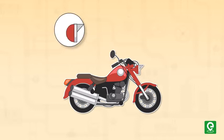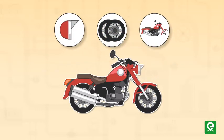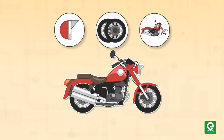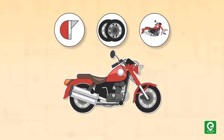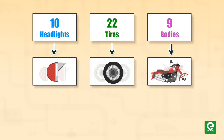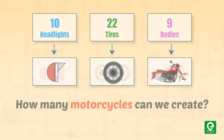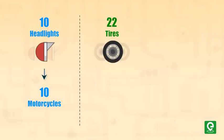Let's assume that there are three essential components required to create a motorcycle: namely, a headlight, tires, and the body containing engine, handle, seat, etc. To create one motorcycle we need one headlight, two tires, and one body. Suppose we are given 10 headlights, 22 tires, and nine bodies. How many motorcycles can we create? By simple calculation, with 10 headlights we can create 10 motorcycles, and with 22 tires we can create 11 motorcycles.